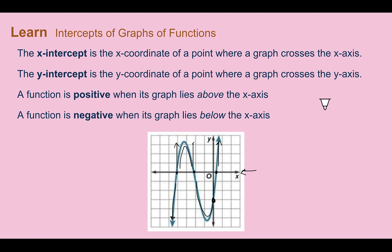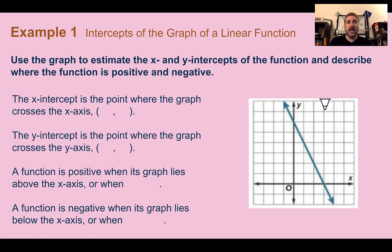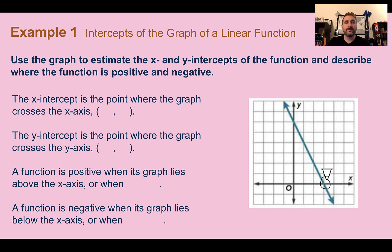Example 1: Intercepts of the graph of a linear function. Use the graph to estimate the x and y-intercepts and describe where the function is positive and negative. The x-intercept is the point where the graph crosses the x-axis — that is at (3, 0), so the x-intercept is 3.